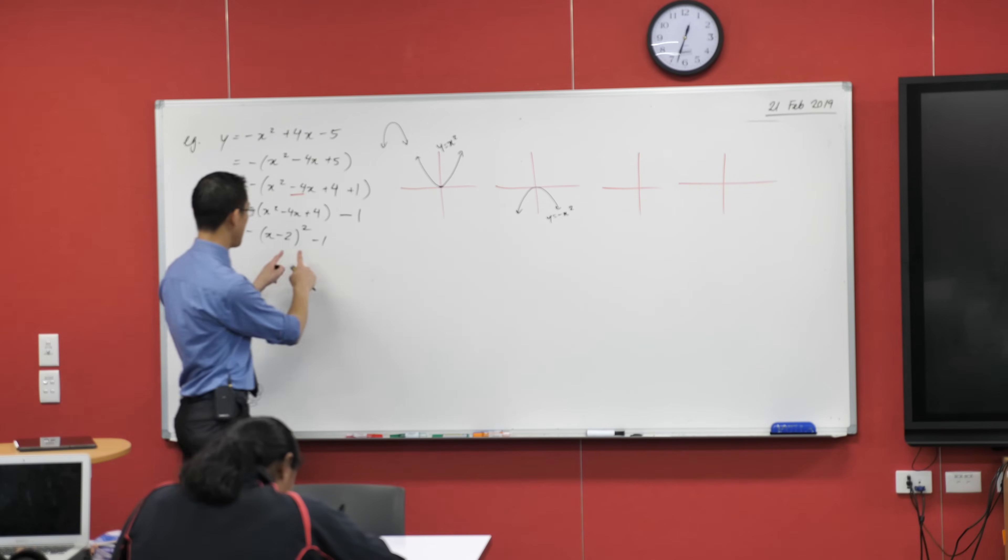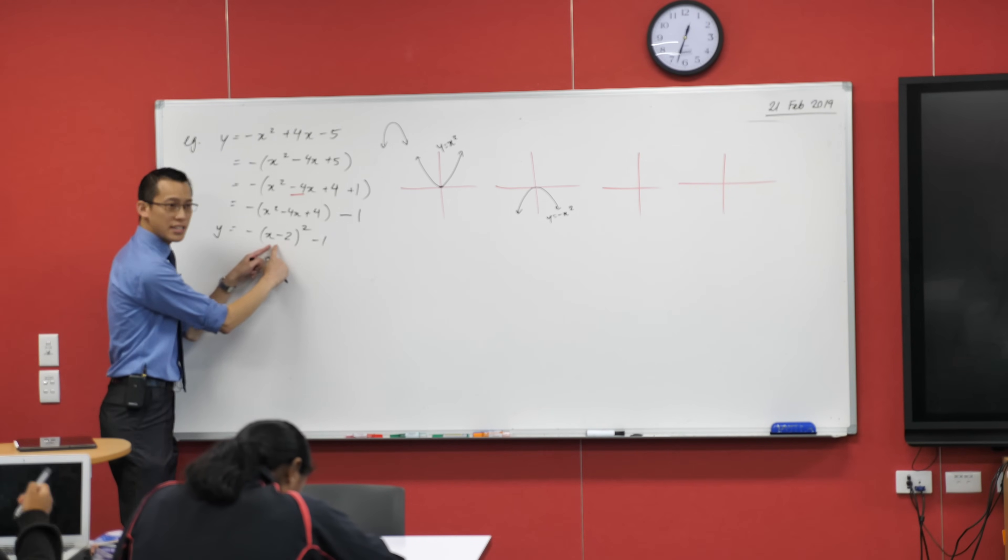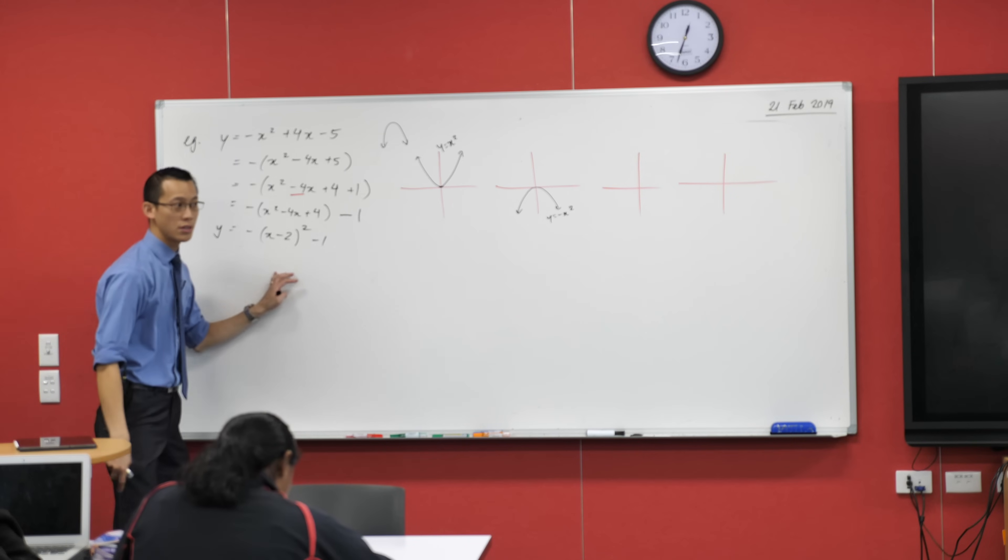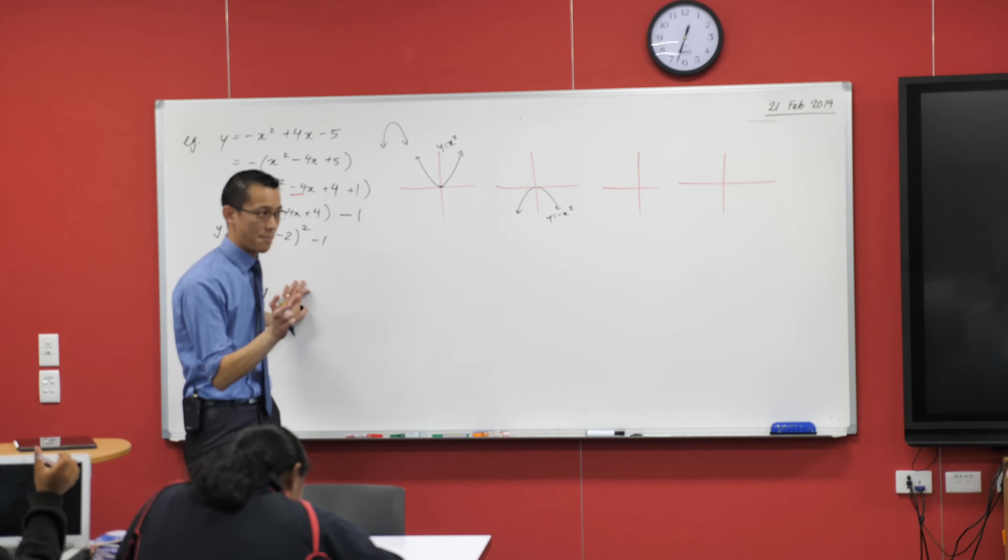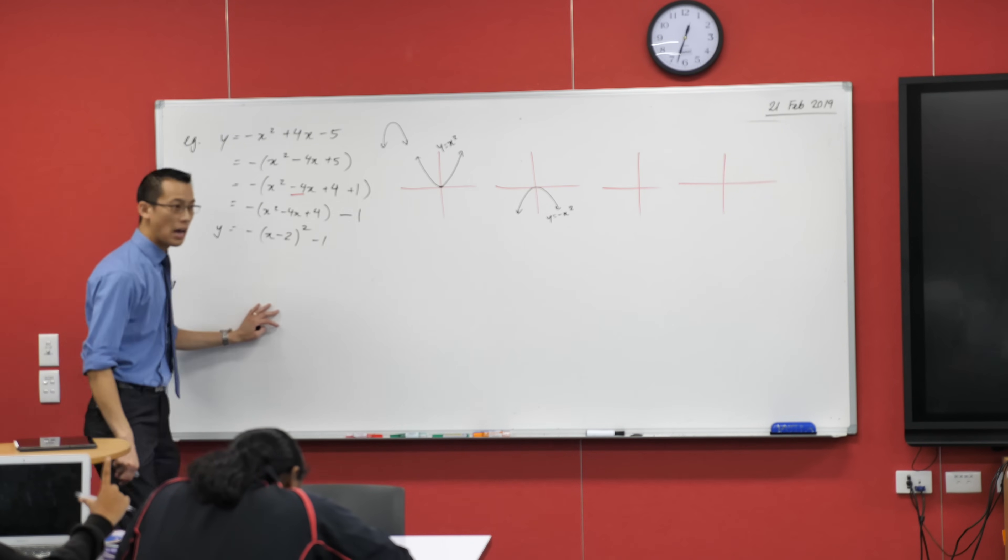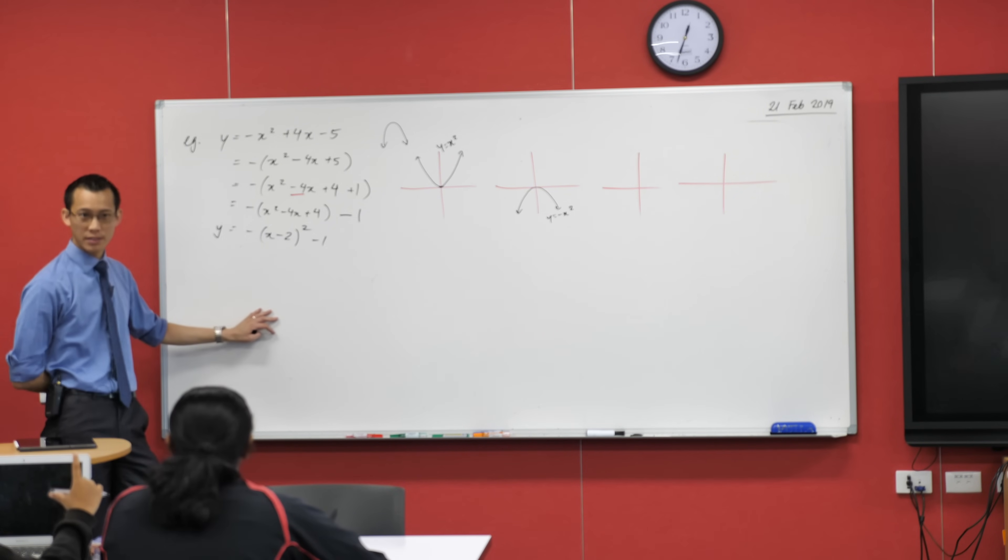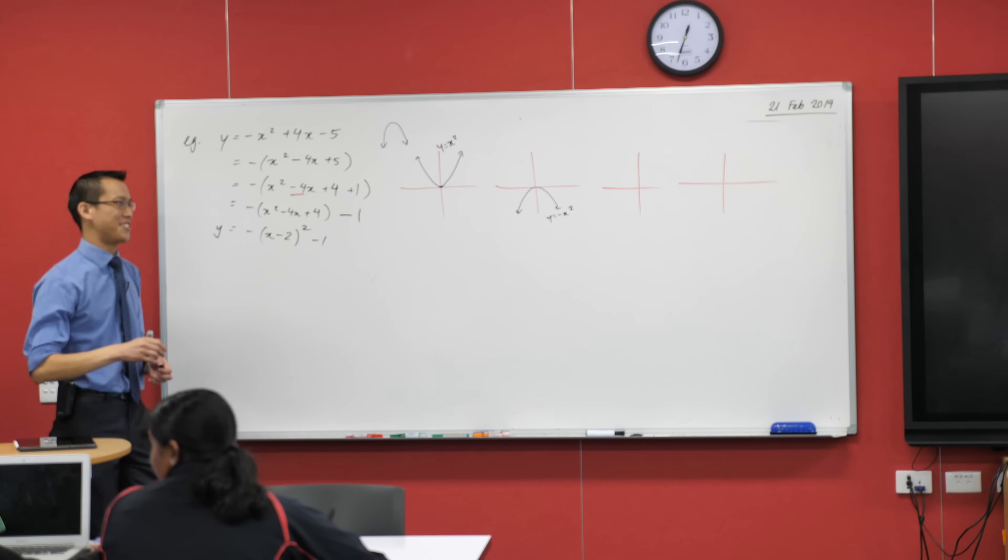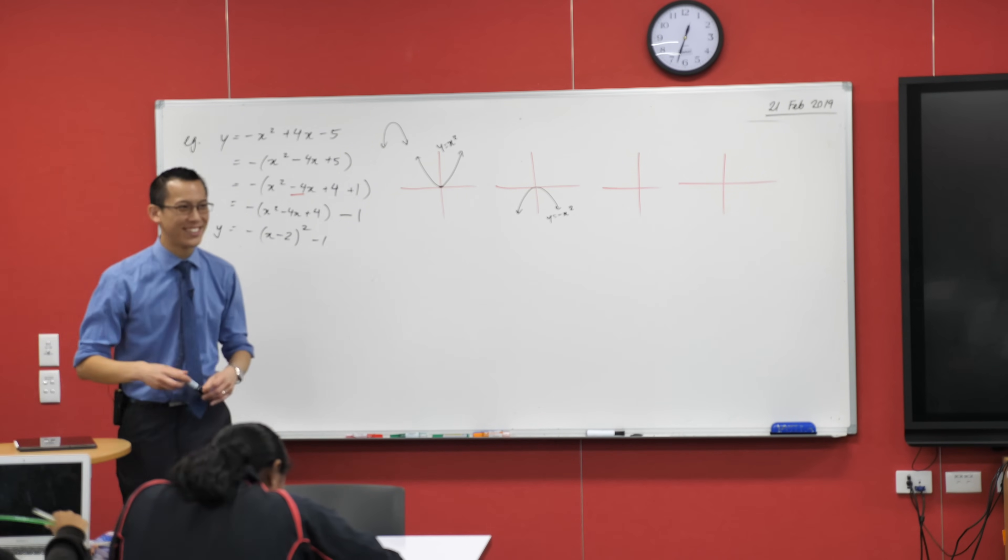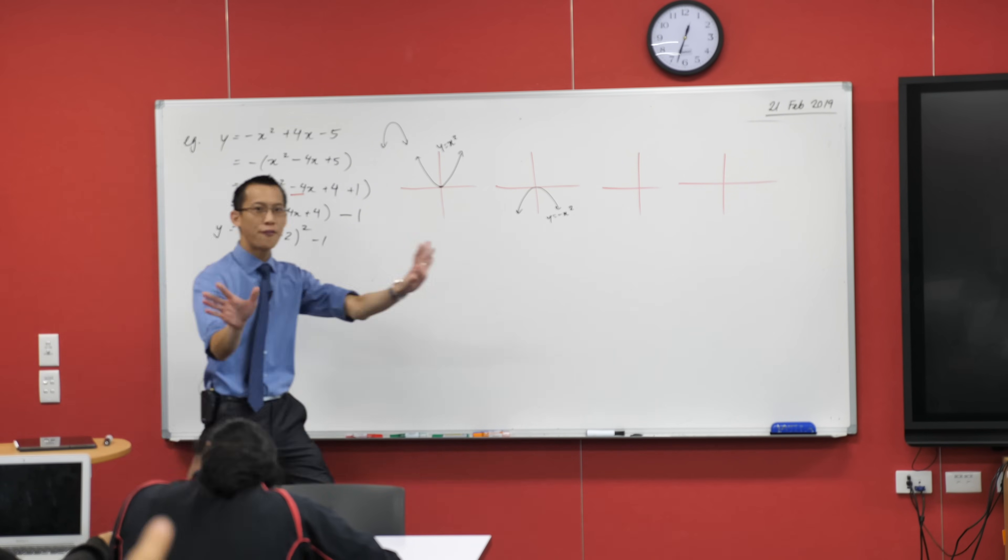But then you've got these bits here, right? Now what is this 2, this almost minus 2? There's a shift that's going to happen. Which way is it going to go? To the right? Are you sure? To the left? Should I get them to vote?